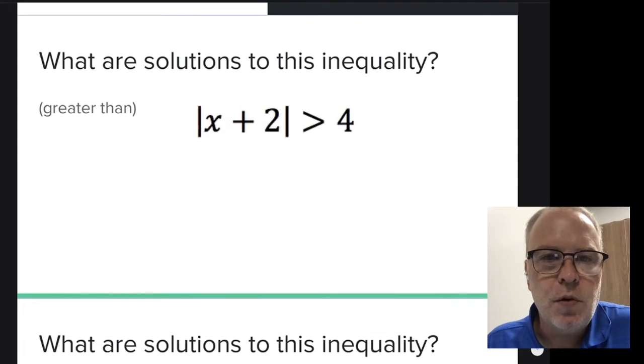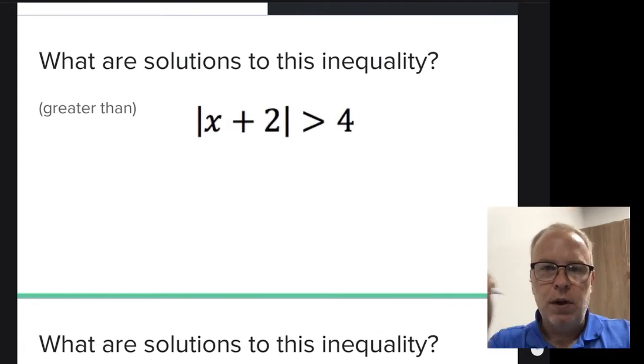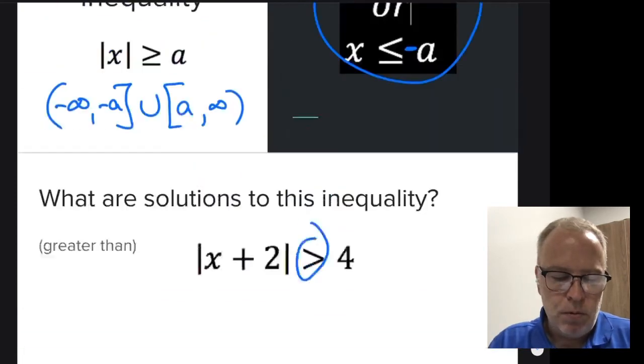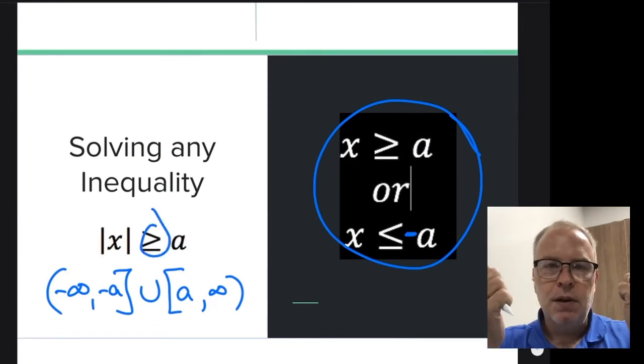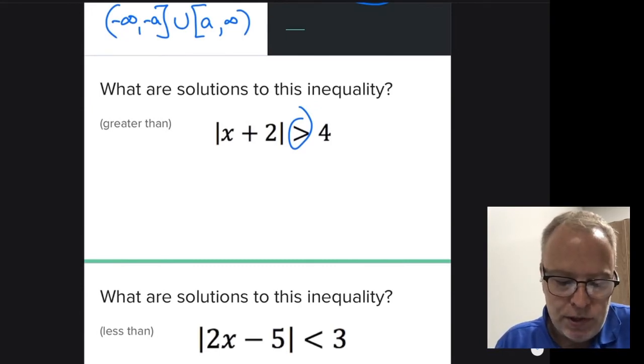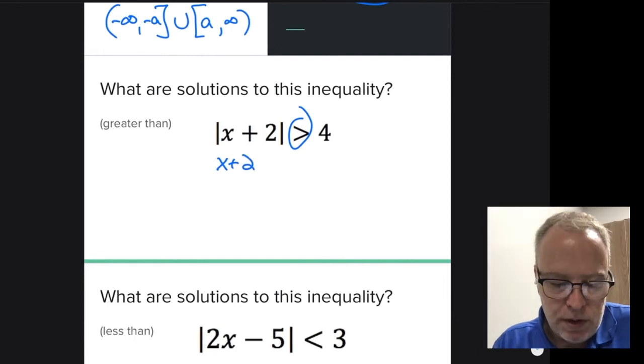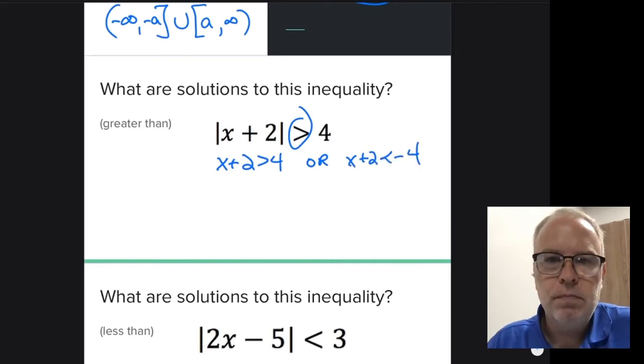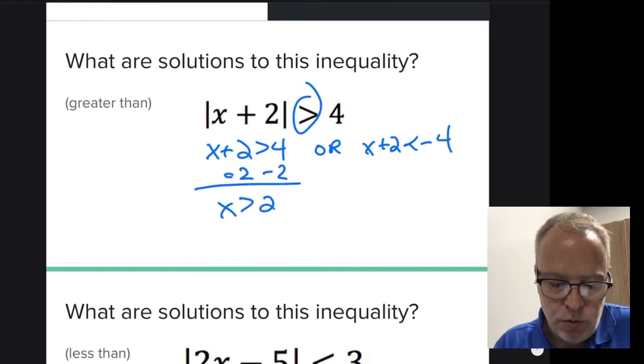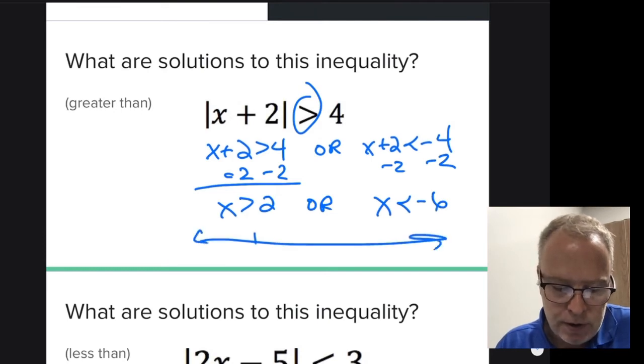So what are the solutions to this inequality? So the first thing you have to decide, is this one of these types or is this a between question? Well, it's got the greater than symbol. So going back in the notes, a greater than symbol is a diverging or moving away from each other type graph. So what we would say is x plus two needs to be bigger than four or x plus two needs to be less than negative four. Remember branching it off? That's basically what I did just now. I branched it off. Minus two minus two, x has to be bigger than two or minus two minus two, x has to be smaller than negative six.